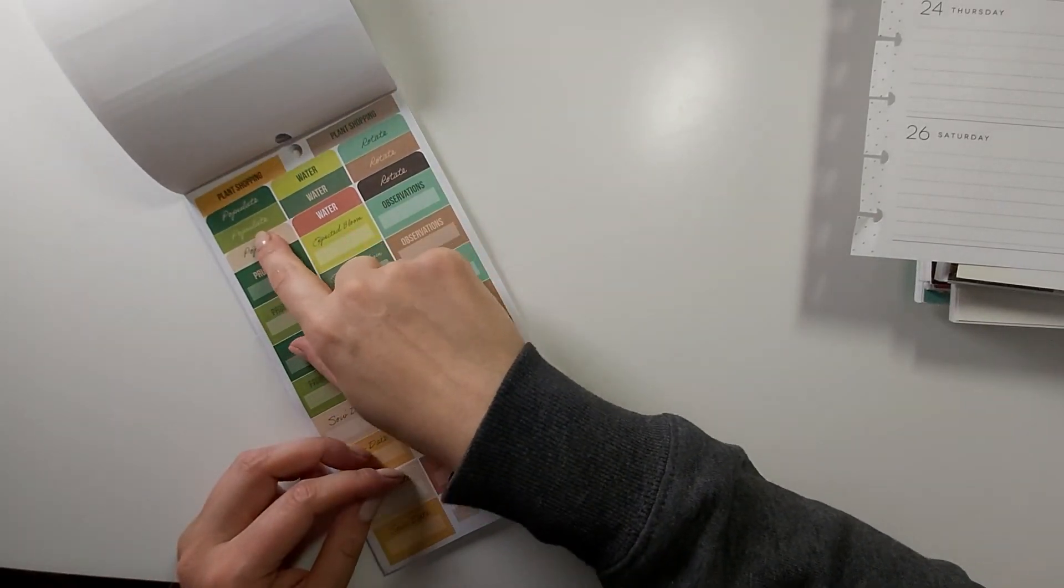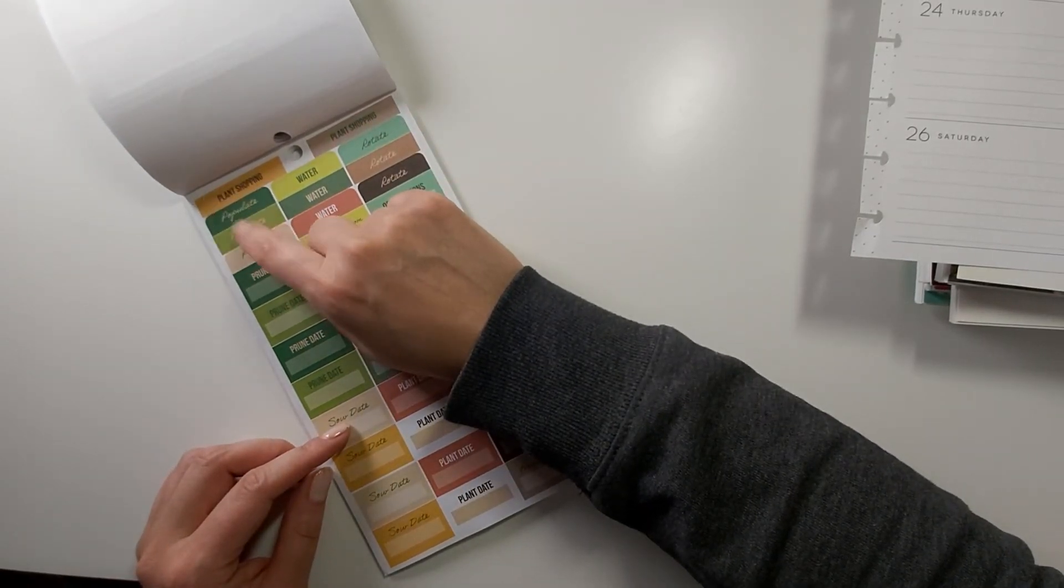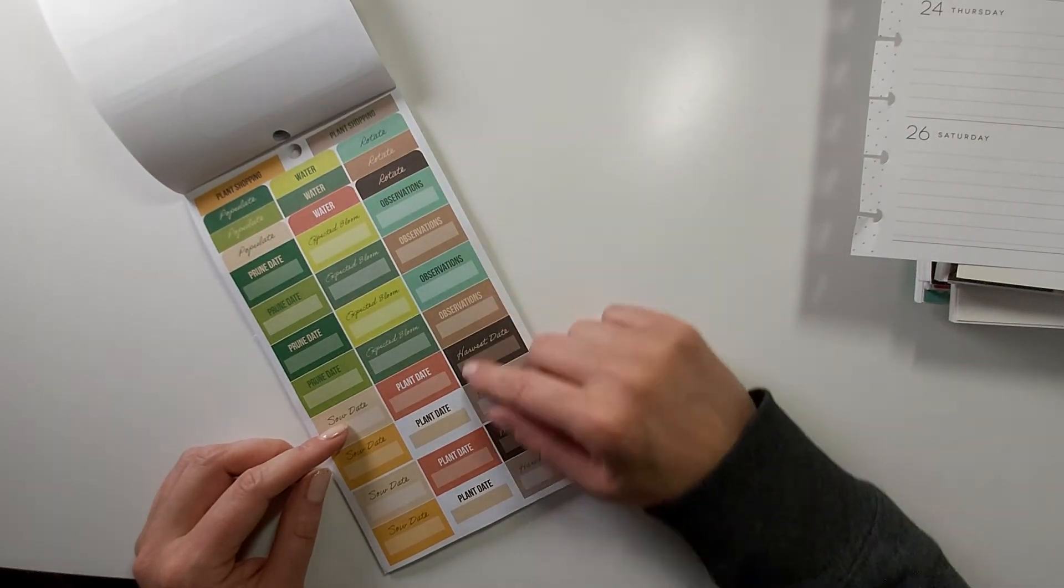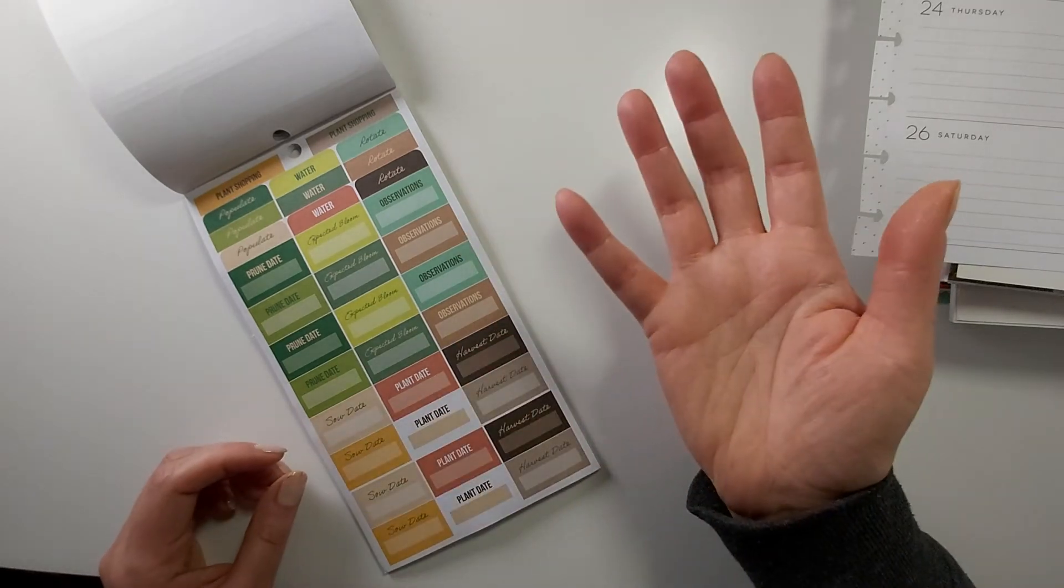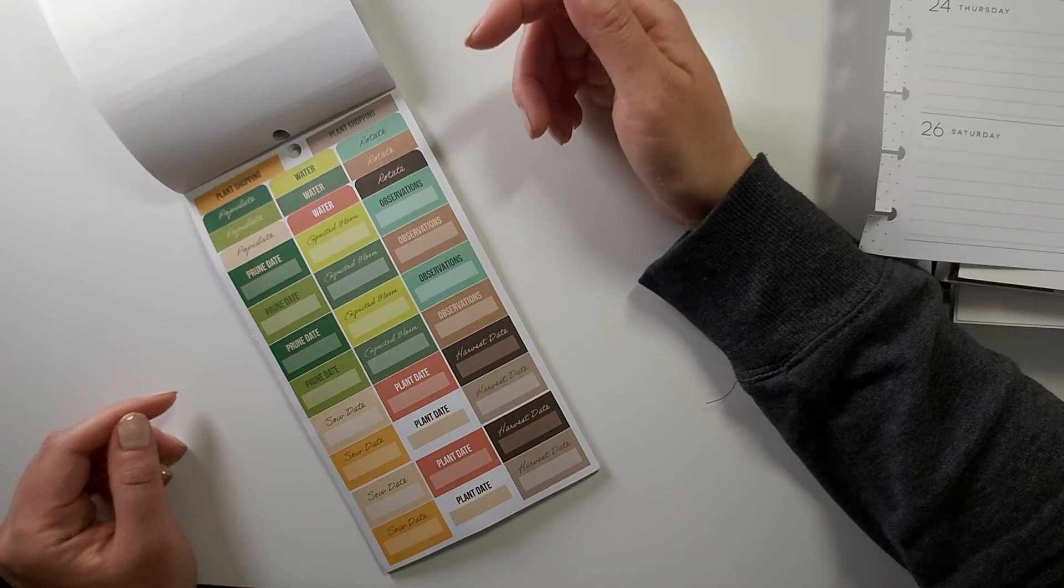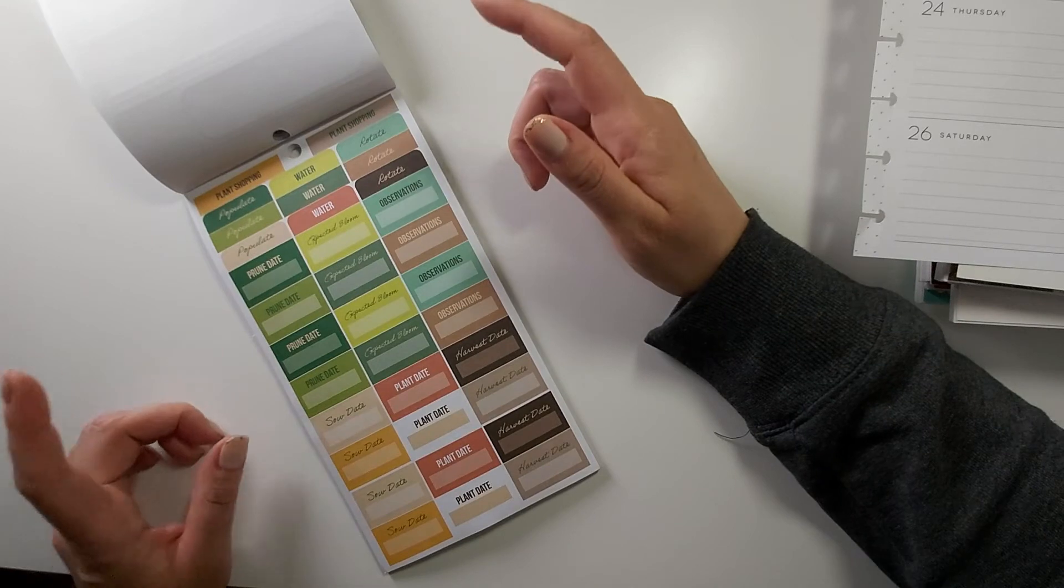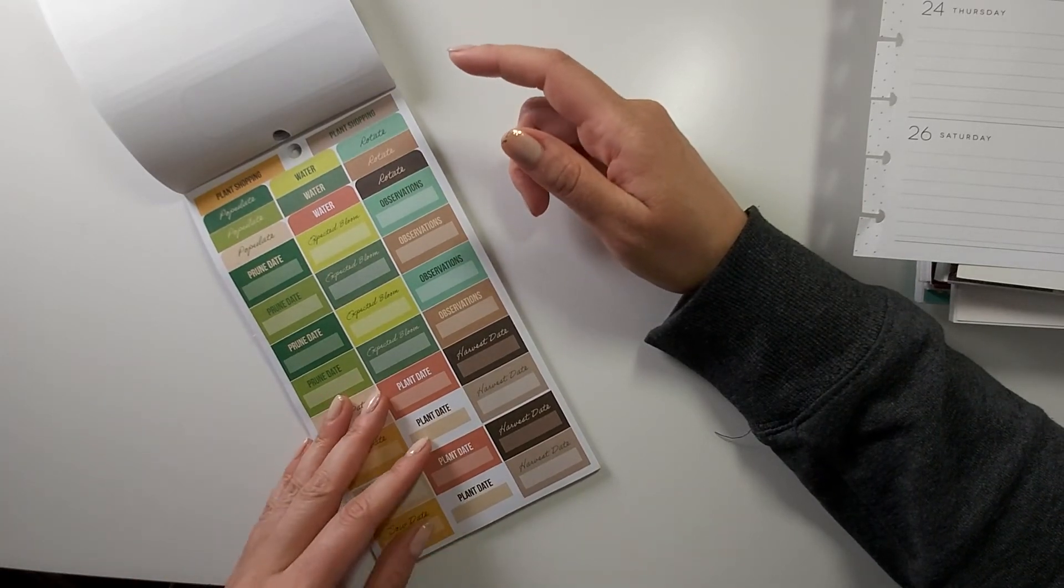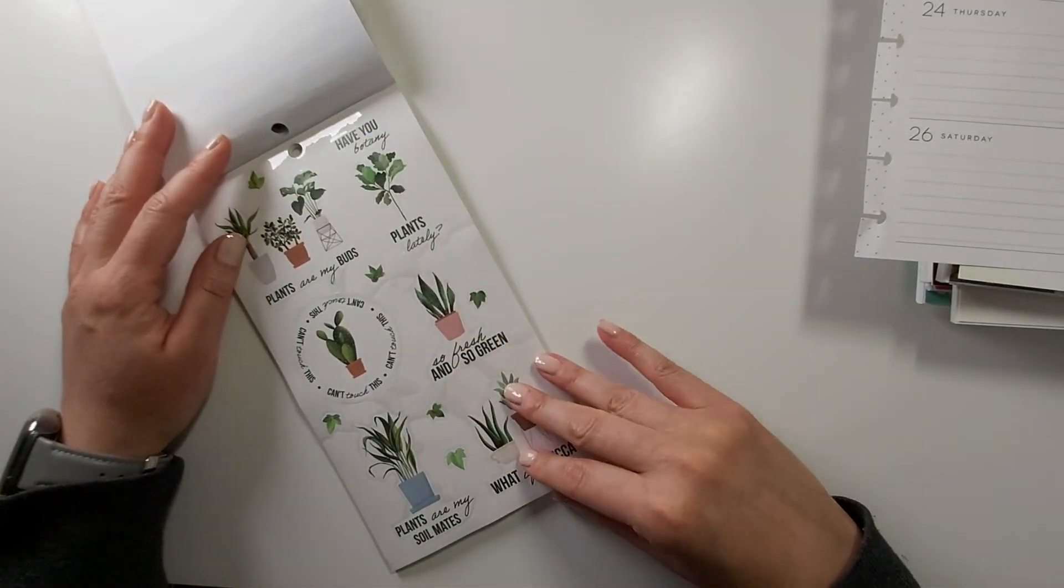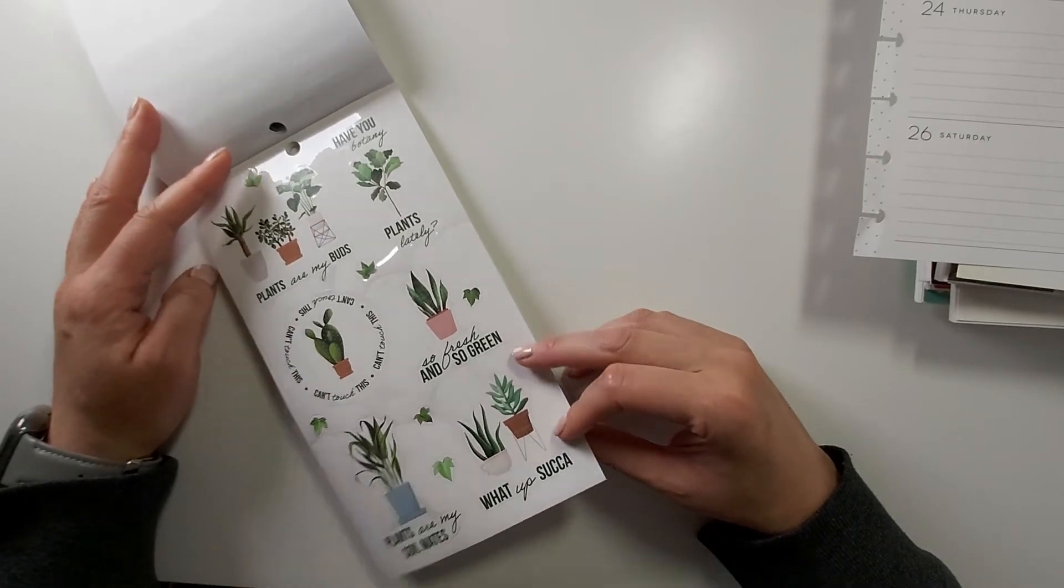Okay so this is a really weird book. Here's another thing that's weird: populate. I think they mean propagate, especially since it's like... Okay whatever. Populate peeps, water, rotate, populate, prune, dates expected, blame, observations. So date plant, date harvest, date populate. Again no orchids, cool.